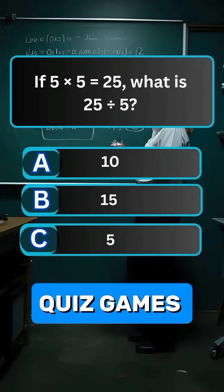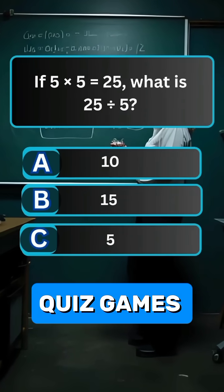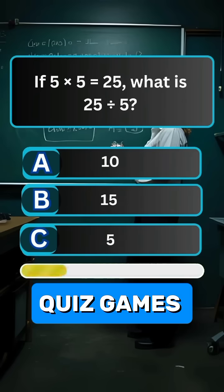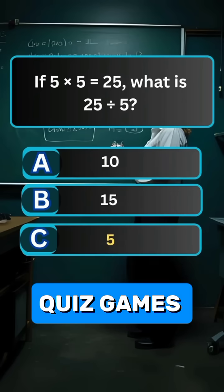Question 6. If 5 multiply by 5 equals 25, what is 25 divided by 5? Answer C. 5.